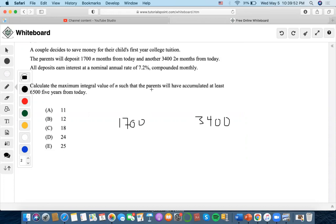We have to set up an equation equal to $6,500 five years from today. We can set it up in a discounting format: $1,700 V to the N plus $3,400 V to the 2N equals $6,500 V to the 5. It's all monthly and all present value.